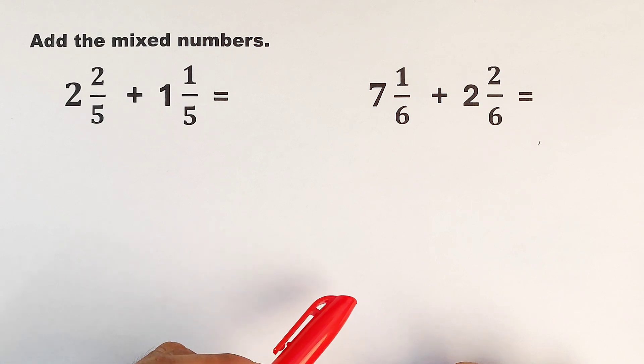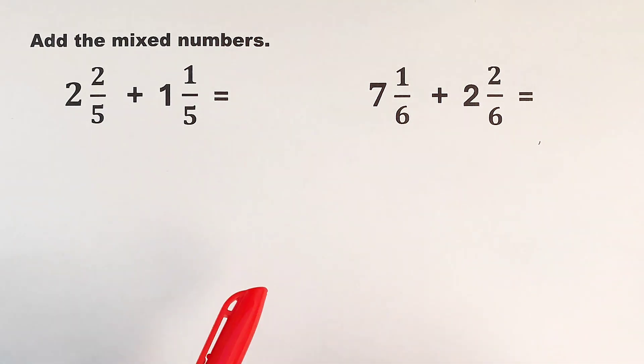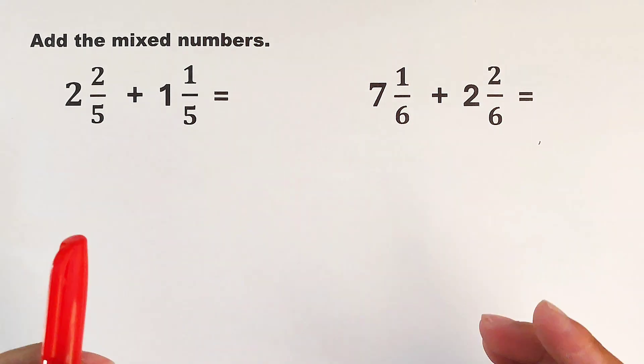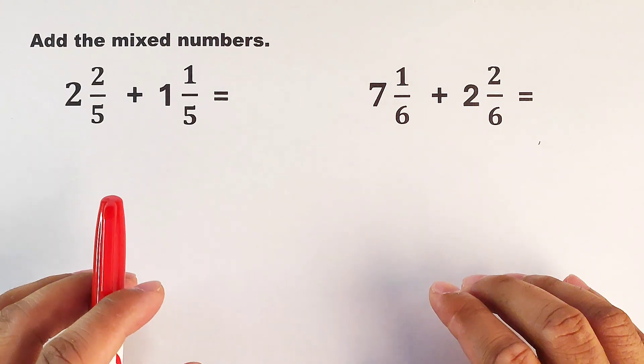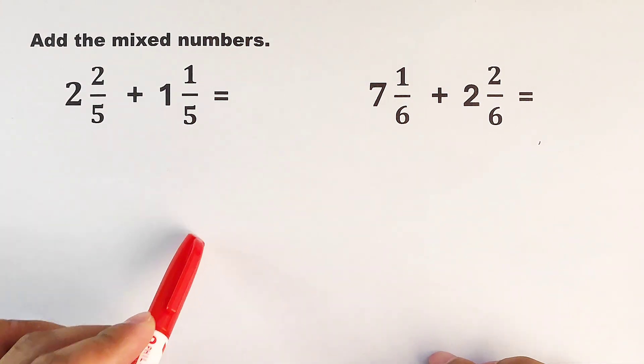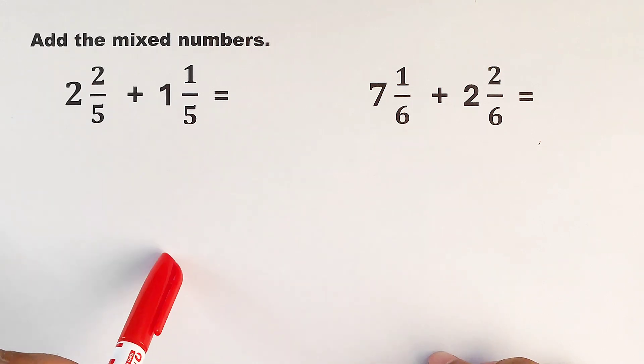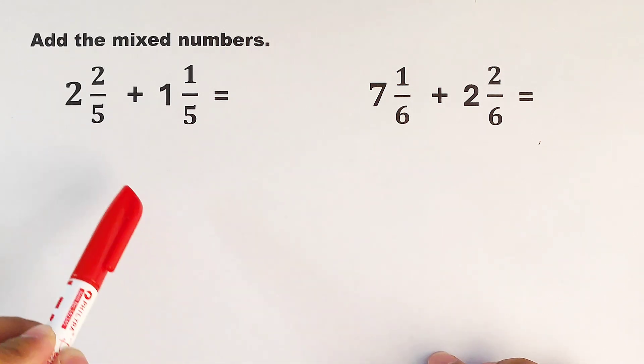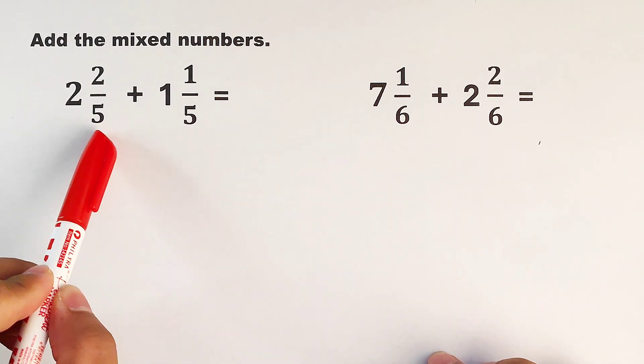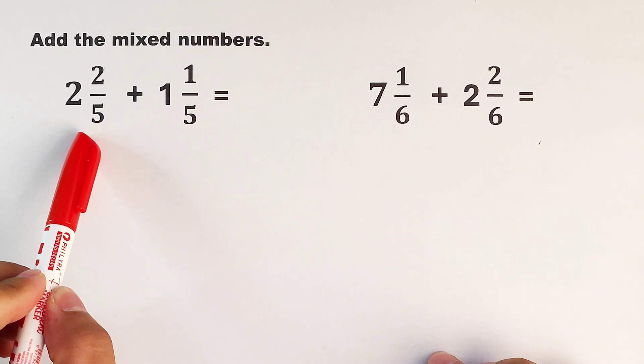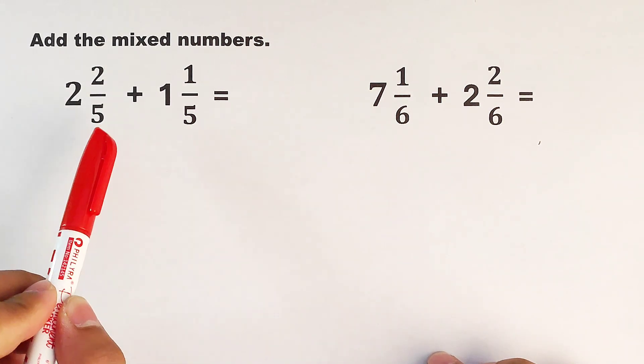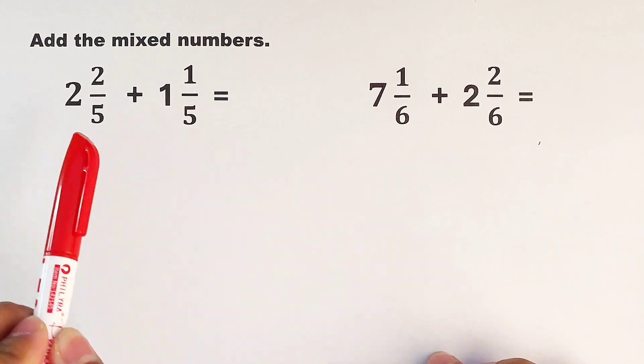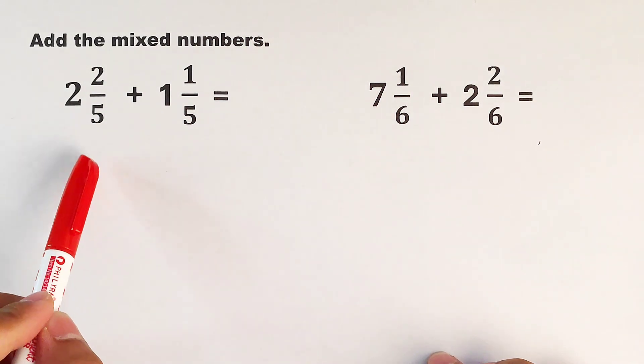What we have here right now is the next level on how to add fractions, and that is adding mixed numbers. This one is quite simple because the mixed numbers have the same denominator in the fraction part, meaning this one is as easy as 1, 2, 3. So let's get started.